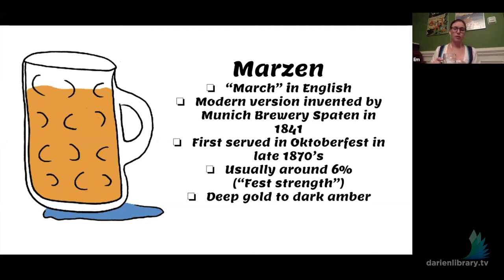Märzen does mean March in English. The history behind that is that breweries would brew their last beer of the year in March. They were not allowed to brew in the summer. It was illegal because when you're lagering, it's too hot, and the beer would spoil. So they would only brew from around like October to March or so. And so they would make this last beer, lay it down in the lagering caves for the whole summer, deep in the mountains, and then they would drink it at a harvest time and party.